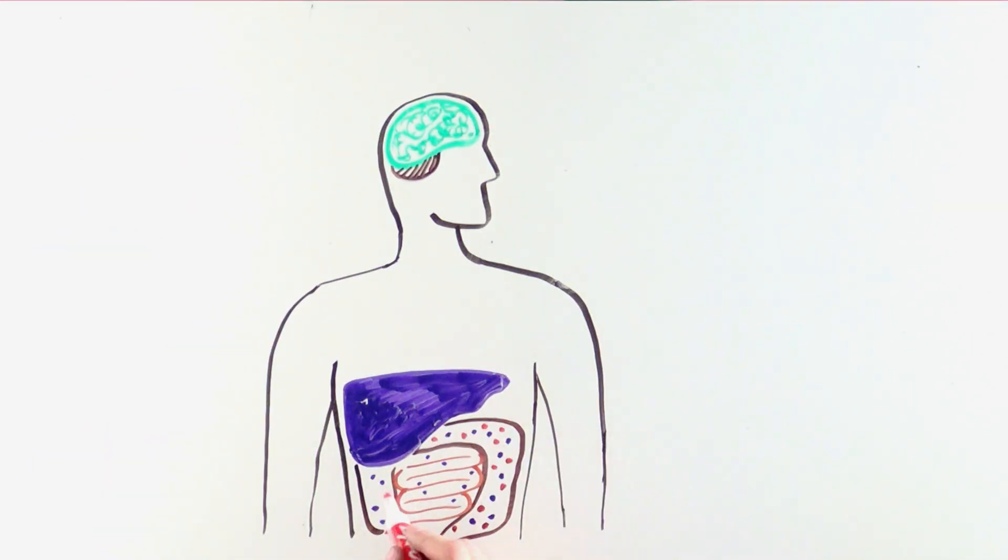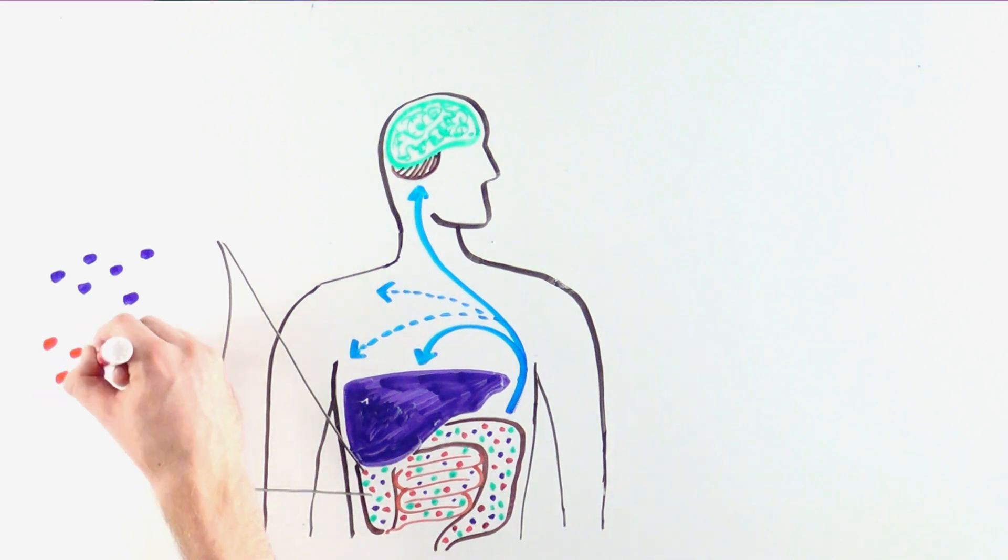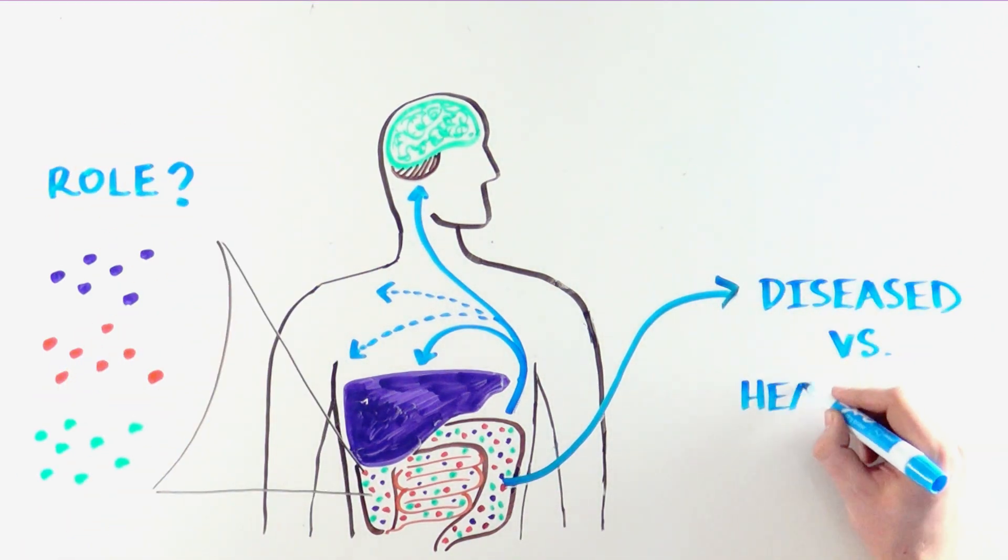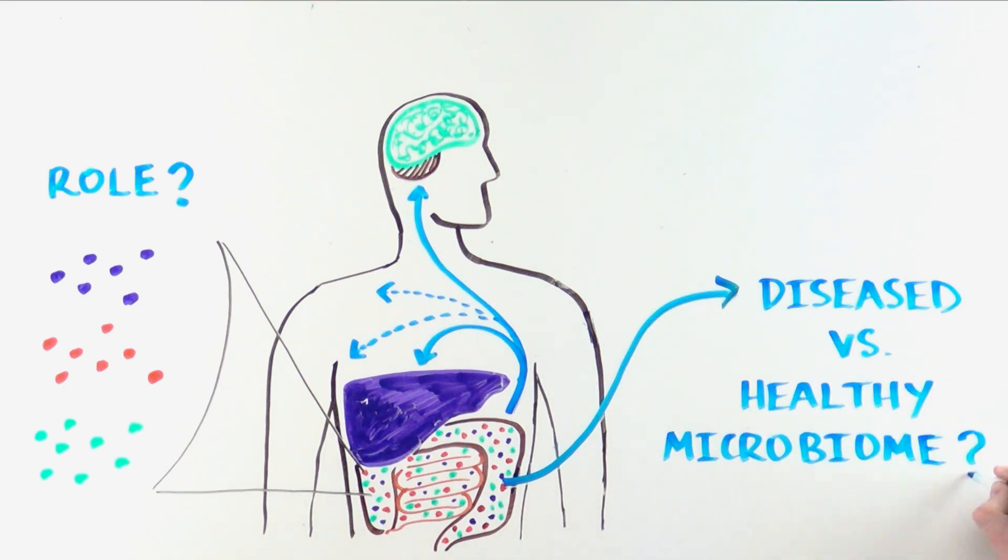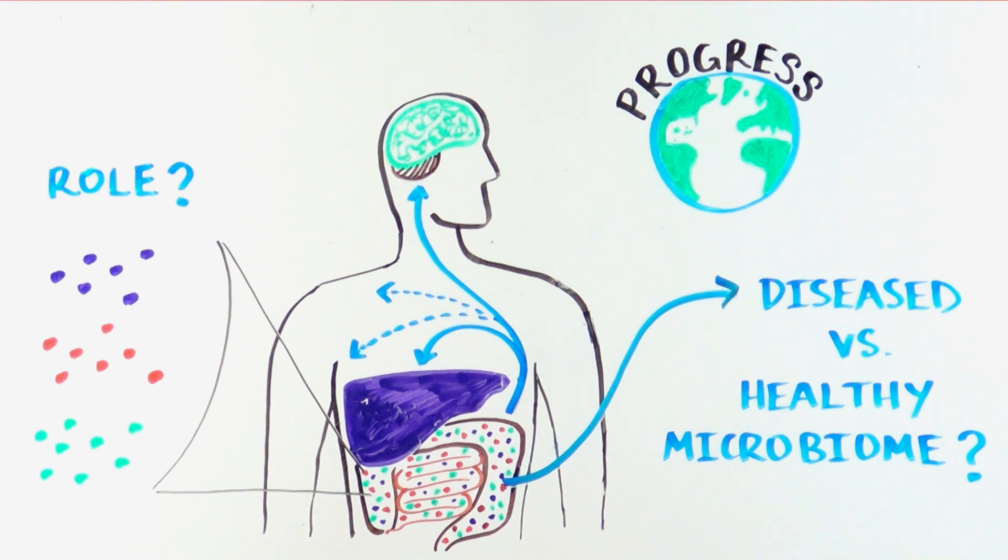So as you can tell, the gut microbiome influences biology from our liver to our brains and has far-reaching implications for our health. There's still much we need to understand about the role of the different microorganisms and what defines a diseased versus healthy microbiome. Much progress is being made around the world to better understand this intriguing community that lives in our bodies.